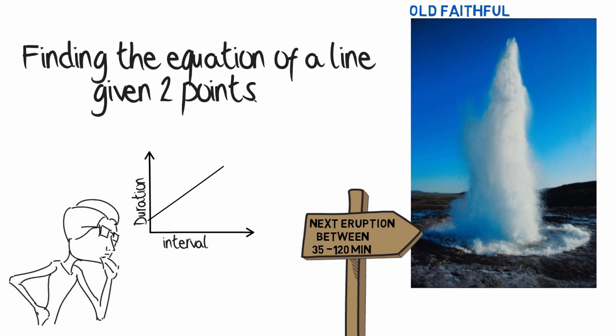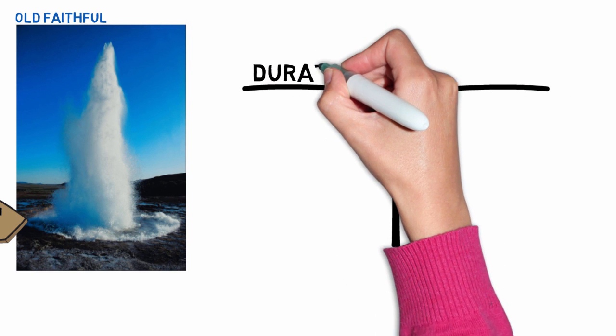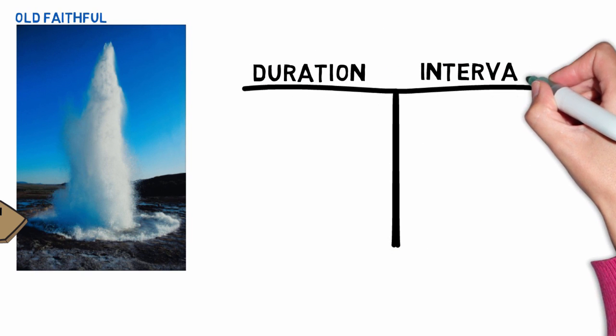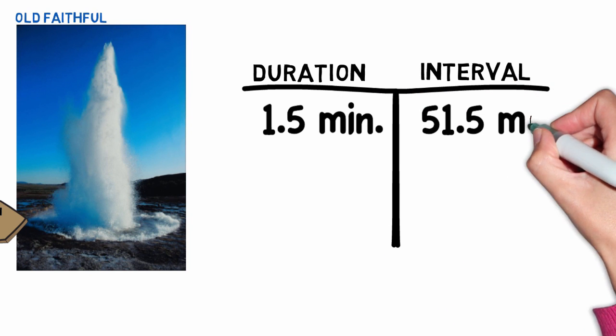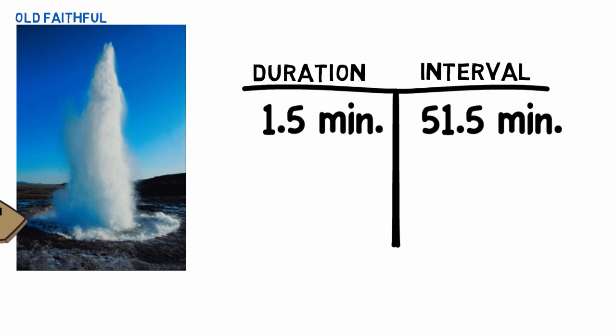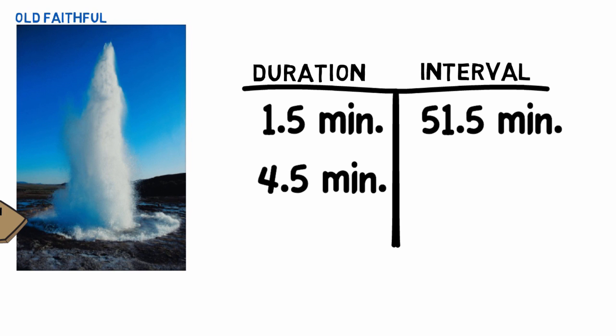The first thing we need before we can write an equation is to have some data points. We need to know the duration of the eruptions and the interval between eruptions. We know that one eruption lasted a minute and a half, and it was another 51 and a half minutes before the next eruption occurred. That eruption actually lasted four and a half minutes, and it was another 89 minutes before the next eruption.